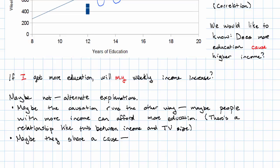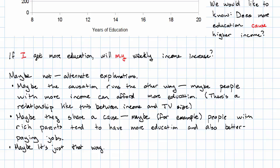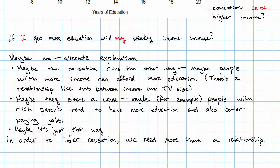Maybe they share a cause — maybe there's something that causes people to have more education and also make more money. To make up a plausible sounding idea, maybe people with rich parents tend to have both more education and better paying jobs. Or maybe it just is that way — maybe that's what we observe, and we can predict what someone's income will be by looking at their level of education, but by influencing their level of education, we can't change what they earn.